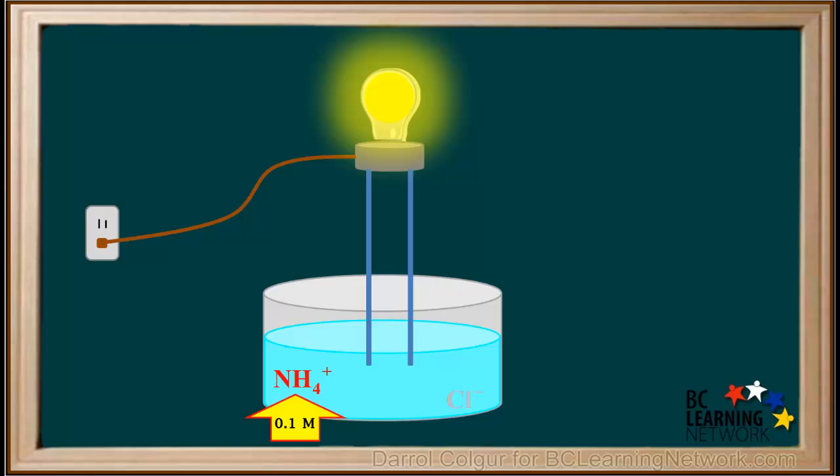Because NH4+ is quite a weak acid, most of it will remain as 0.1 molar NH4+ in solution, and only a tiny fraction of it will ionize into hydronium ions and ammonia molecules. This occurs to a very limited extent, so it will have no significant effect on the already high total ion concentration in this solution.